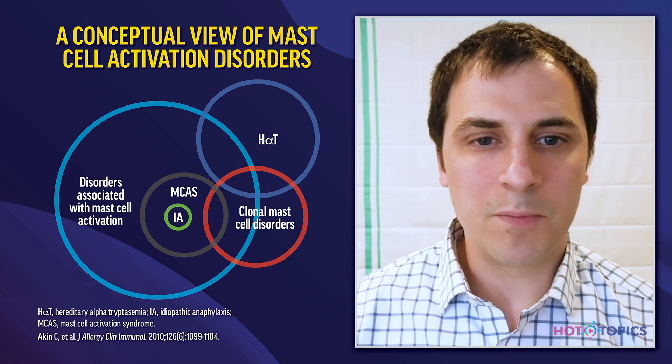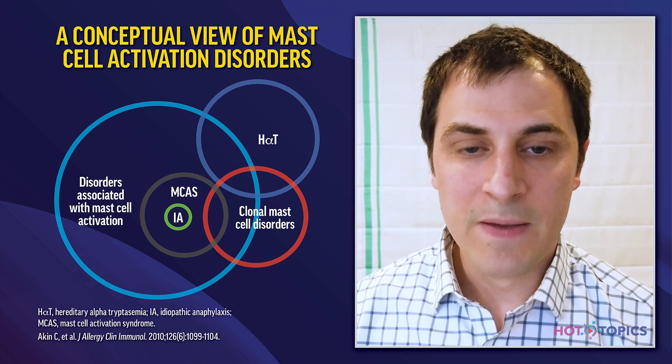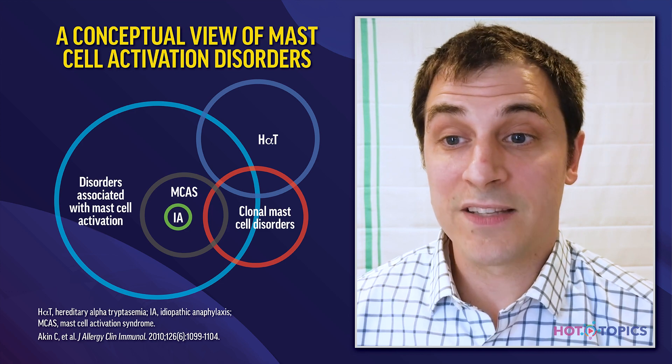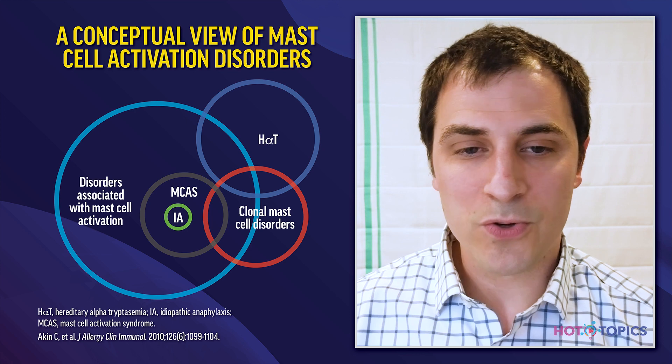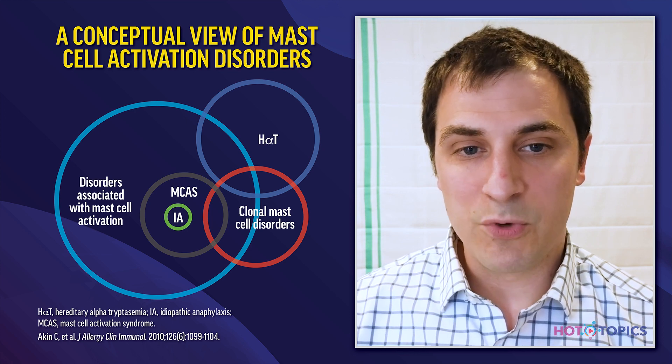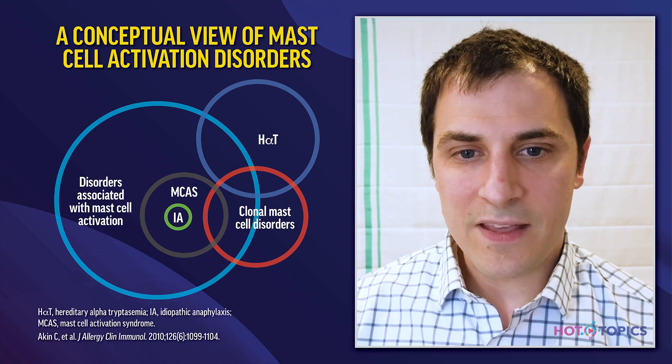I'd first like to start with a conceptual depiction of mast cell activation disorders, which I think is really helpful to contextualize what the specific disorders are and how they overlap. In the big blue circle you can see all disorders associated with mast cell activation — this is what most general practicing allergists will see in their clinic. The smaller black circle represents mast cell activation syndrome, characterized by severe activation of mast cells.